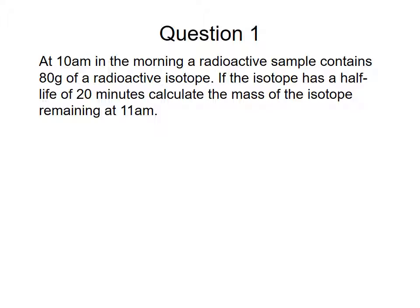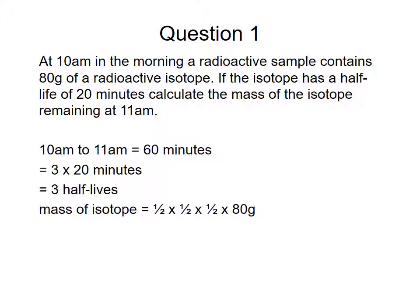So question one. At 10 a.m. in the morning, a radioactive sample contains 80 grams of a radioactive isotope. If the isotope has a half-life of 20 minutes, calculate the mass of the isotope remaining at 11 a.m. So it's going to be an hour. It's got a half-life of 20, so it should have gone 3 decays. So it means it's going to be half times a half times a half times 80, which should give you the answer of 10 grams an hour later.